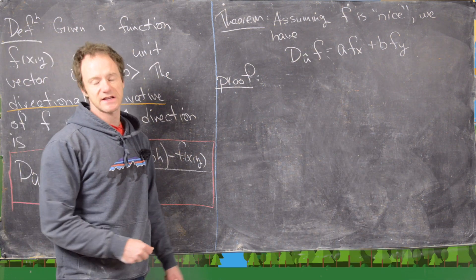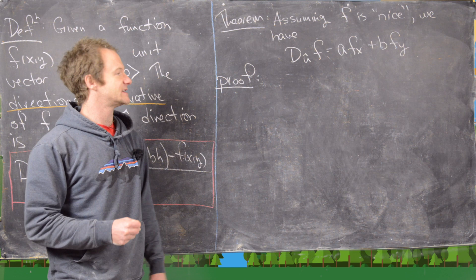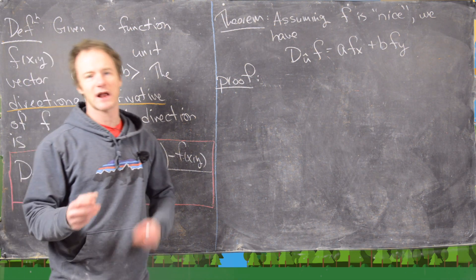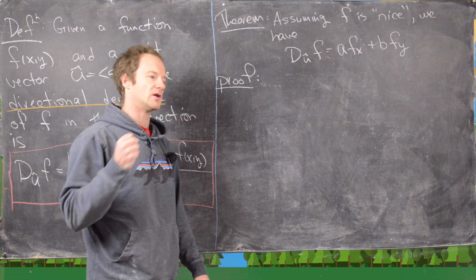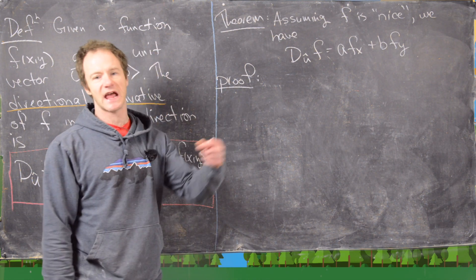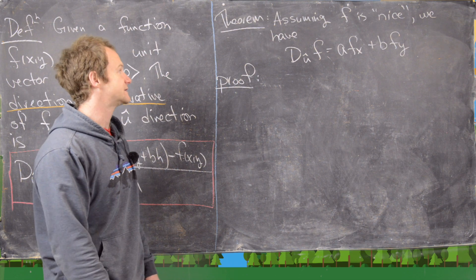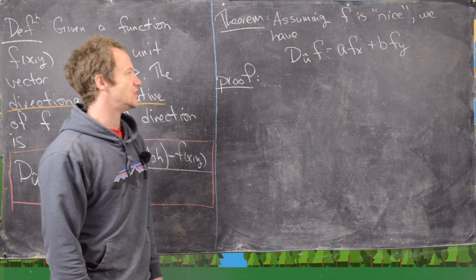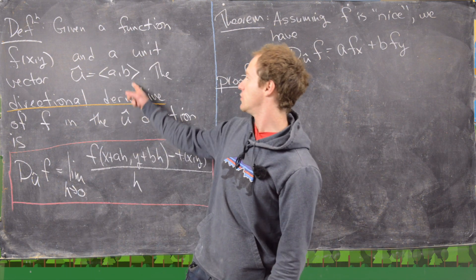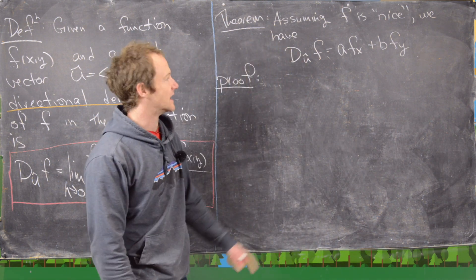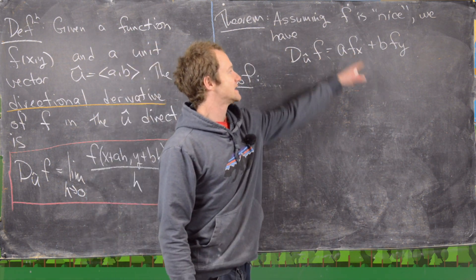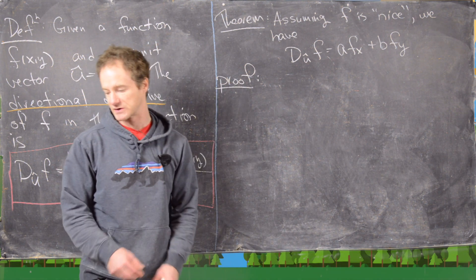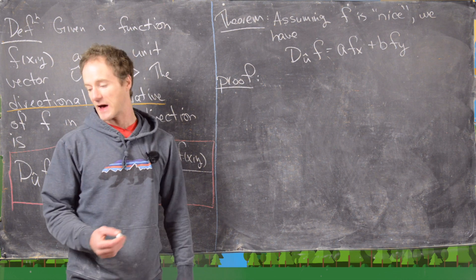This theorem makes it a lot easier to calculate the directional derivative. Assuming f is nice — meaning we can take x derivatives and y derivatives — the directional derivative in the u direction, where u is given by components a and b, equals a times the partial derivative with respect to x plus b times the partial derivative with respect to y.